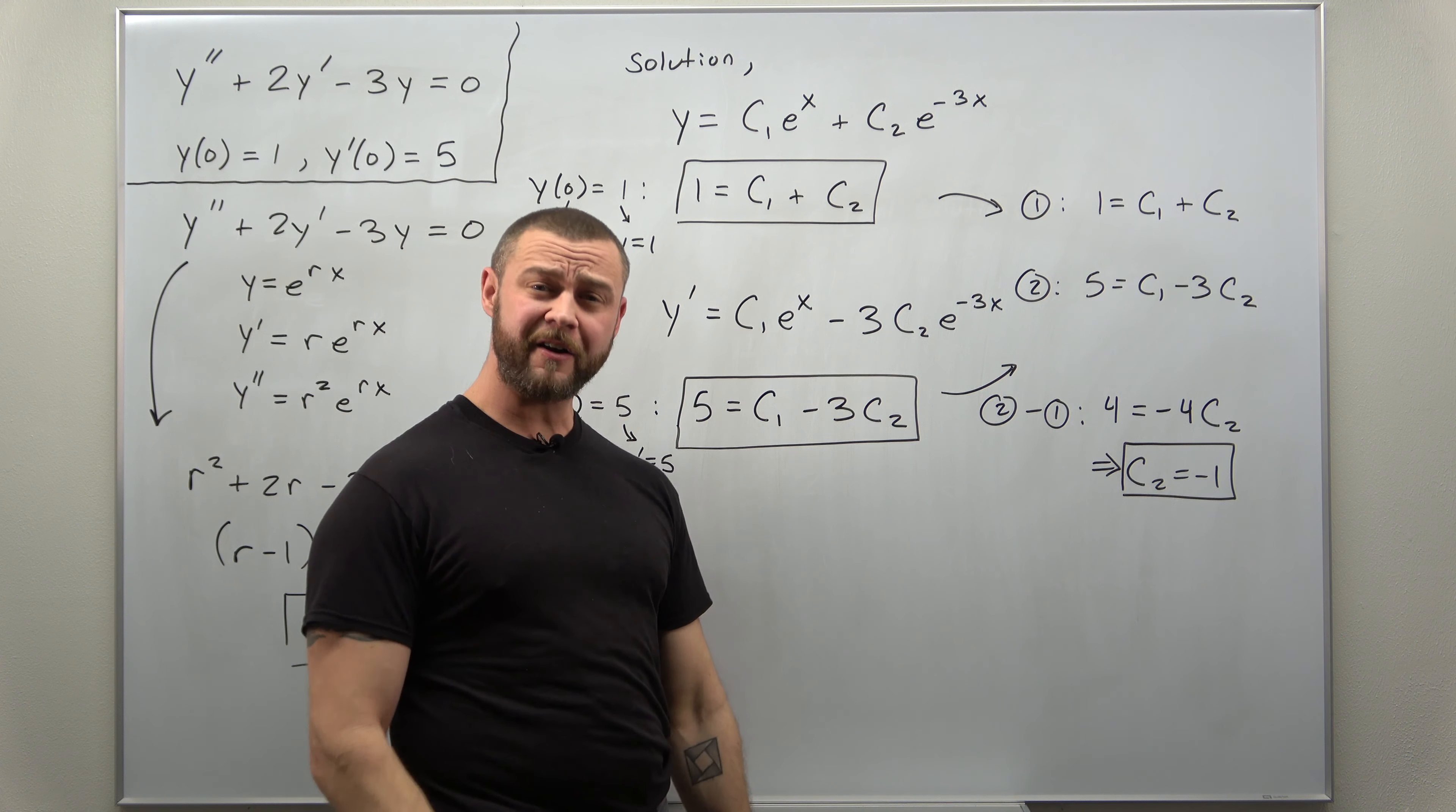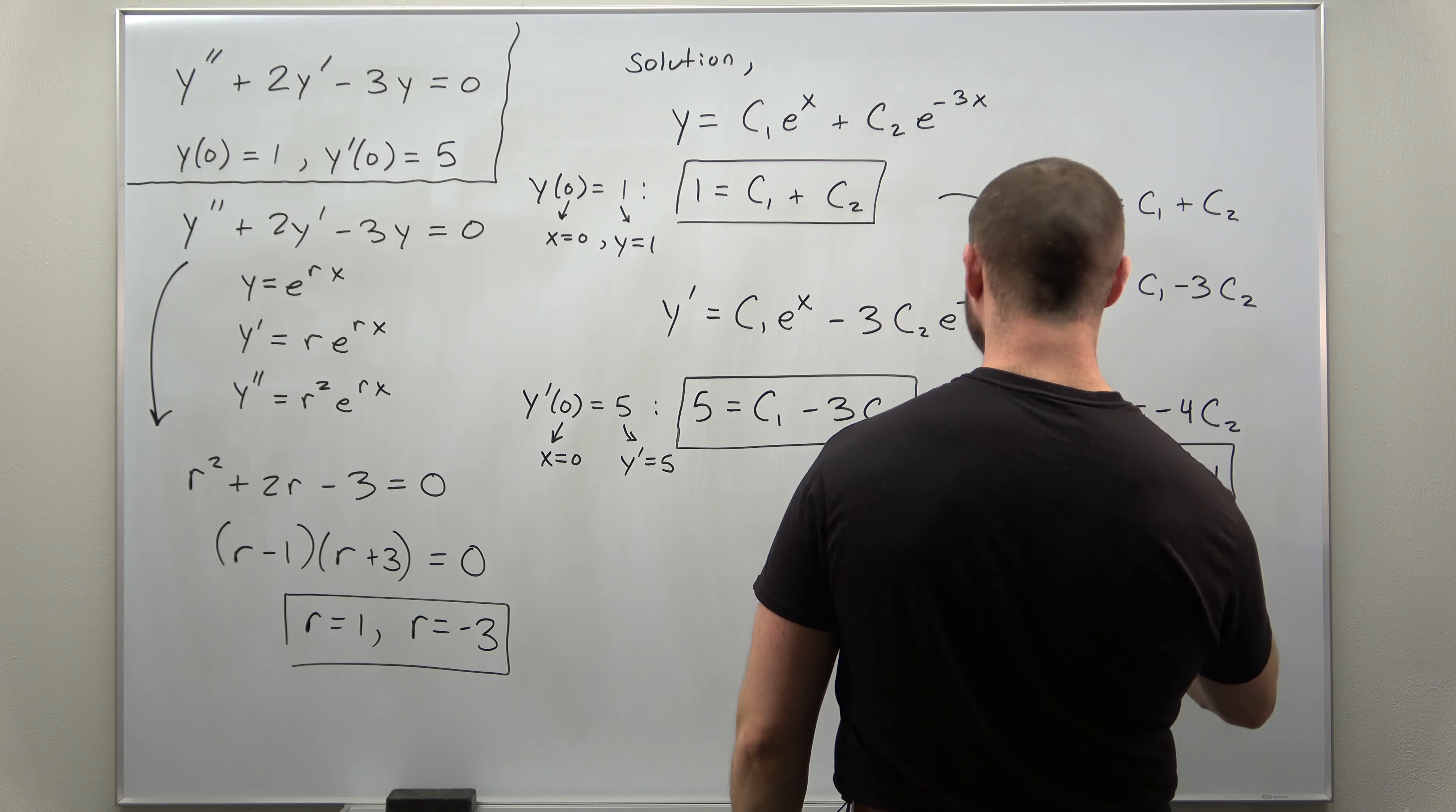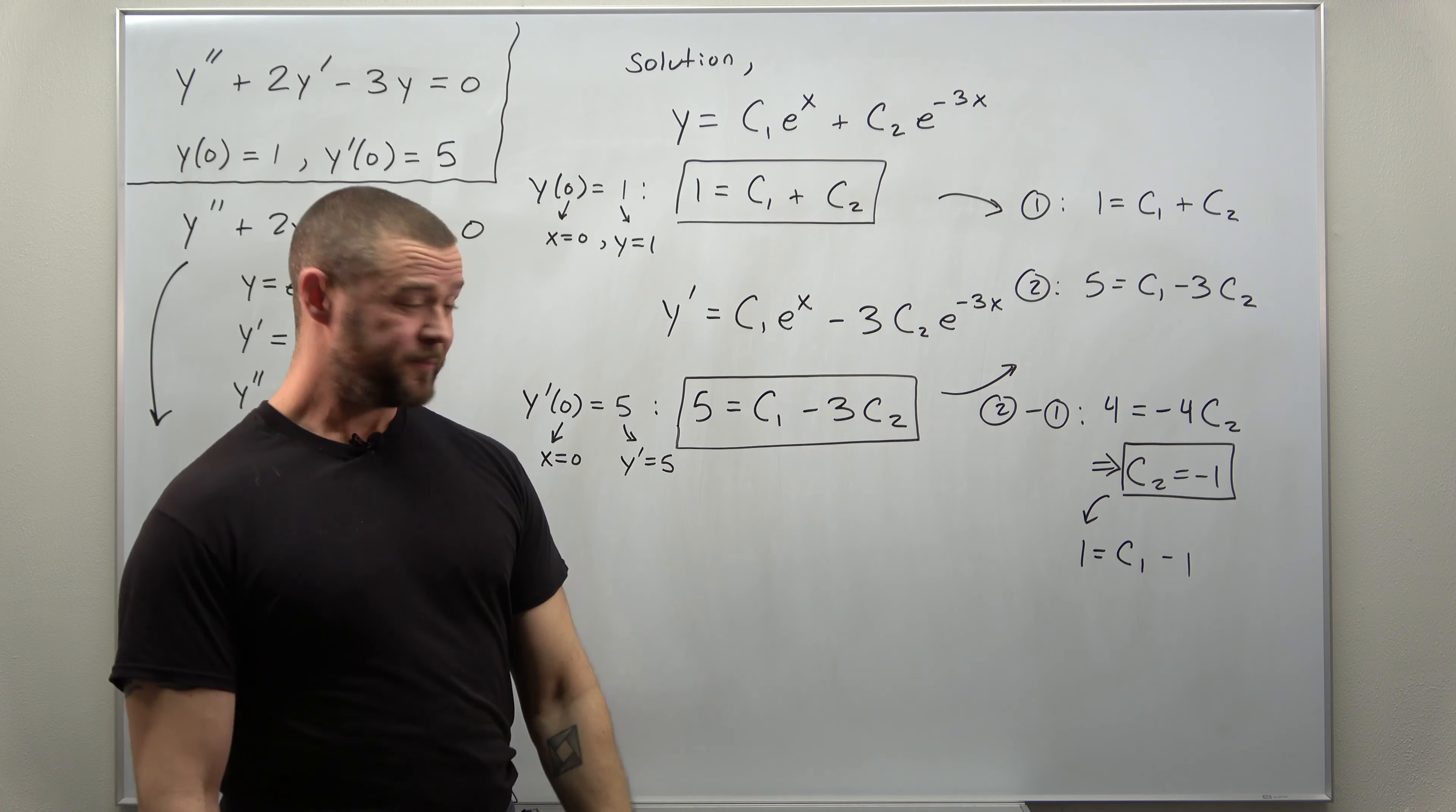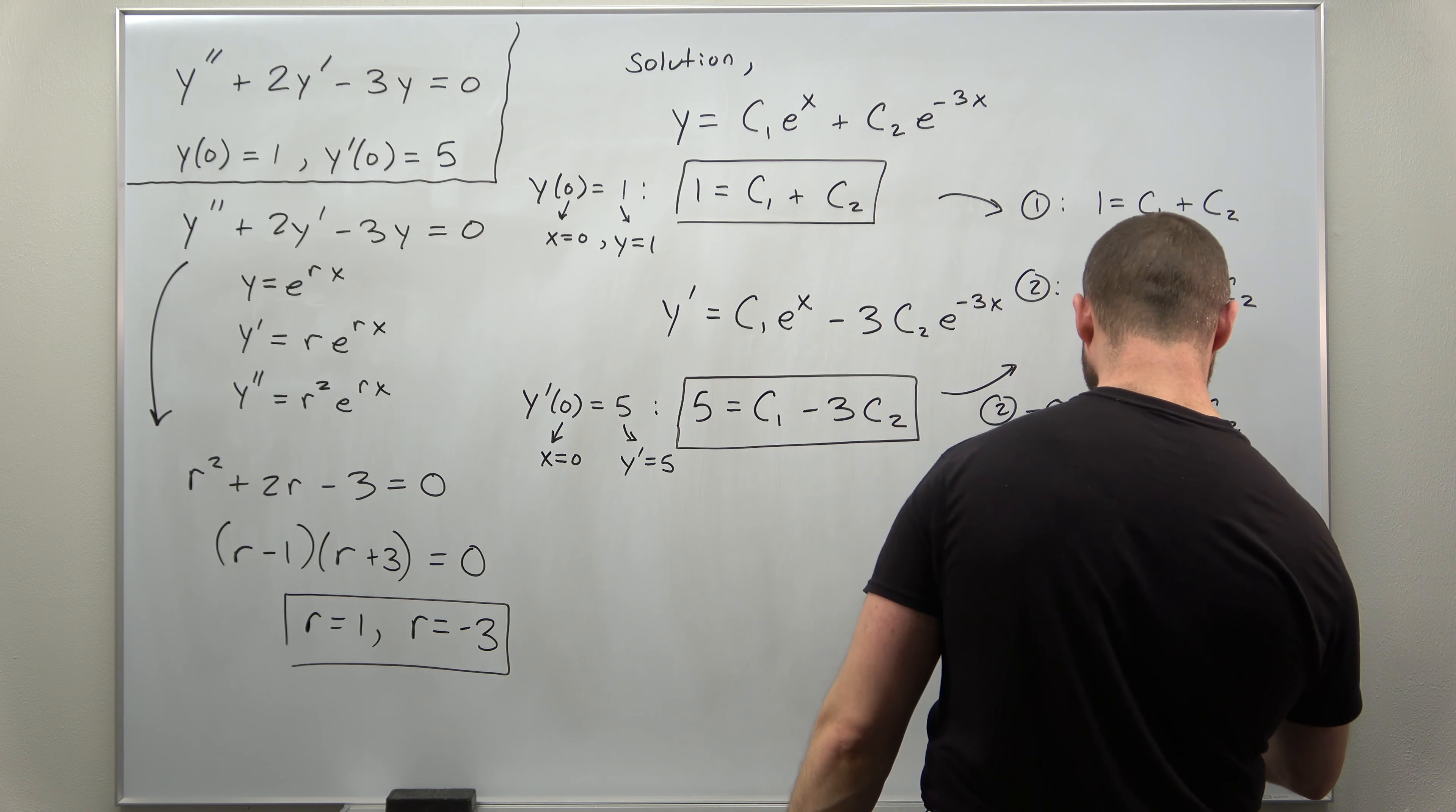And we can just very easily plug that back in to this first equation to get the value for c1. So if we do that, it looks like our equation we get is 1 equals c1 minus 1. And that math is getting a little bit complicated. I think we get c1 as 2.